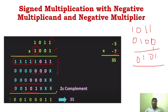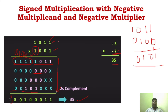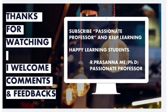Now perform normal addition. The result after adding gives: 2⁵ is 32, plus 2 plus 1 equals 35. So we get plus 35, which is correct since minus 5 times minus 7 equals positive 35. The key rule is: if it is a negative multiplier and the last MSB is 1, you write the 2's complement of the multiplicand for that partial product. Thank you students for watching. Subscribe to Passionate Professor and keep learning. Thank you very much.